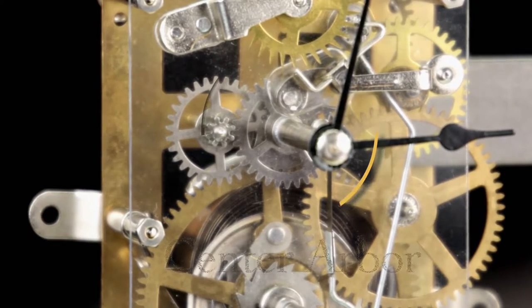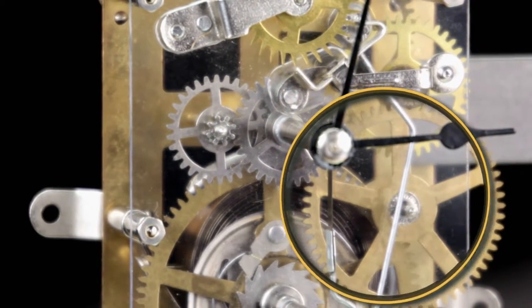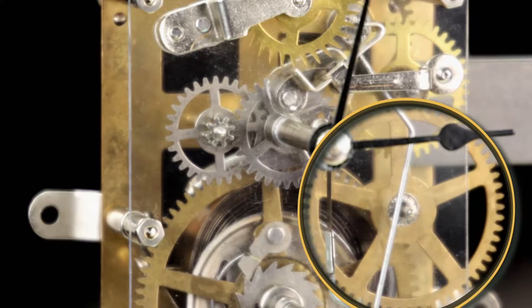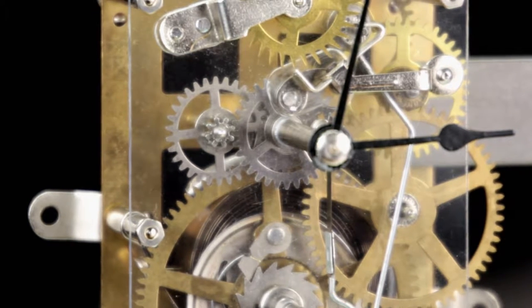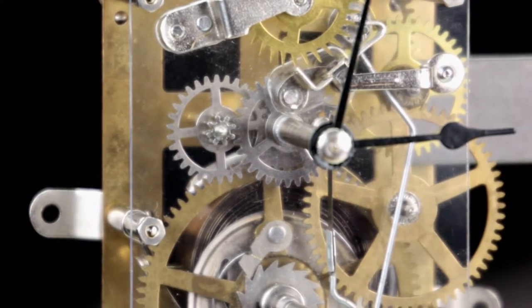In our movement, the center arbor is not a direct part of the going train. It is passively driven by the second wheel. Because the second wheel is part of the going train, the rotation of the center arbor will still be controlled by the escape wheel and pendulum.